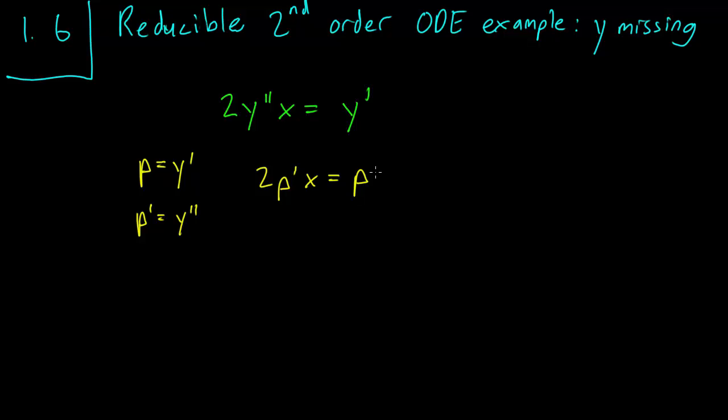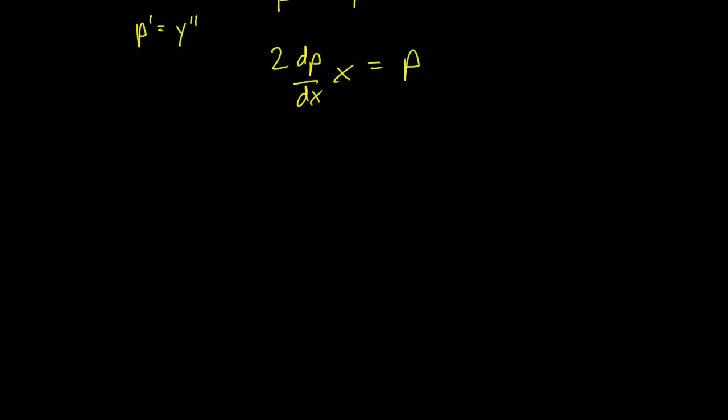This seems like a differential equation we can solve using integration. So let's write it like so. And moving all the p's to one side, we have 2 over p dp equals 1 over x dx.